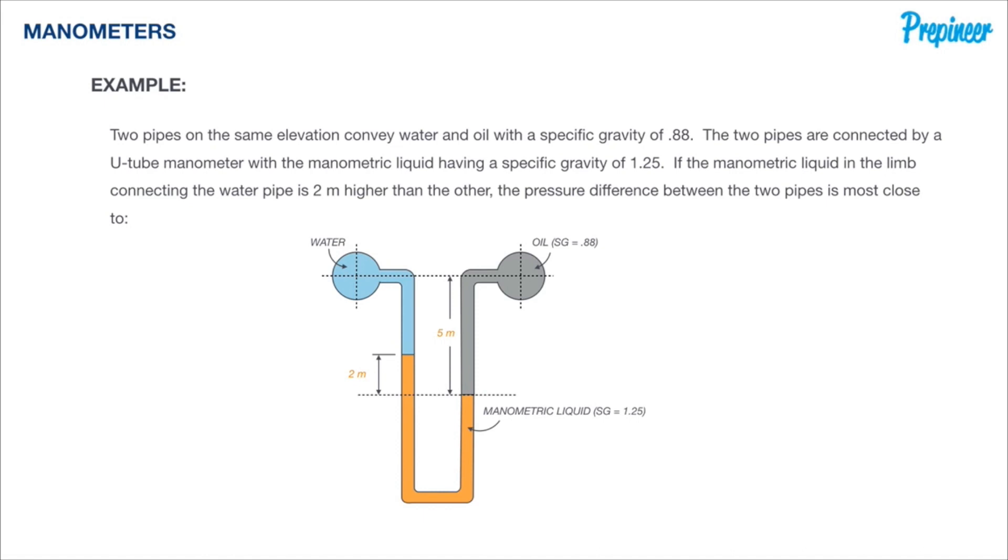This problem says two pipes on the same elevation convey water and oil with a specific gravity of 0.88. The two pipes are connected by a U-tube manometer with a manometric liquid having a specific gravity of 1.25. If the manometric liquid in the limb connecting the water pipe is two meters higher than the other, the pressure difference between the two pipes is most close to what?